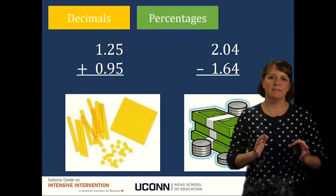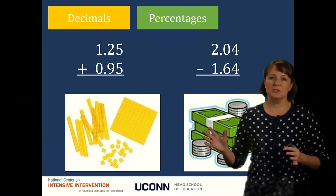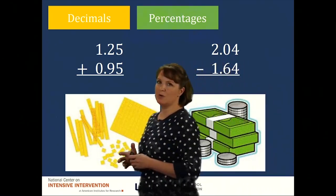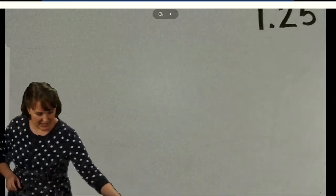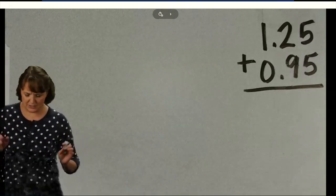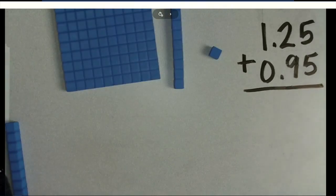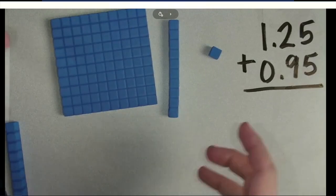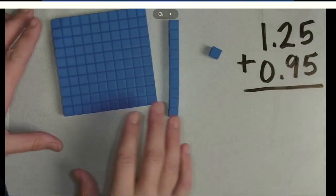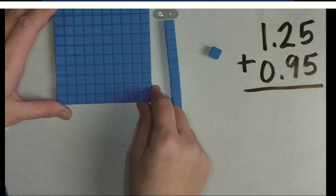So now that we've thought a lot about modeling of fractions, we can also think about modeling of decimals. I'm going to solve 2 different problems here. First I'm going to do 1 and 25 hundredths plus 95 hundredths. Notice how when I'm talking about these decimals, I'm using very nice math language — I'm not saying 1.25, because that's informal. Instead I say 1 and 25 hundredths plus 95 hundredths. So we've used these before — these are our base-10 blocks — and we don't have to use them just for whole numbers; we can also use them for thinking about rational numbers such as decimals.